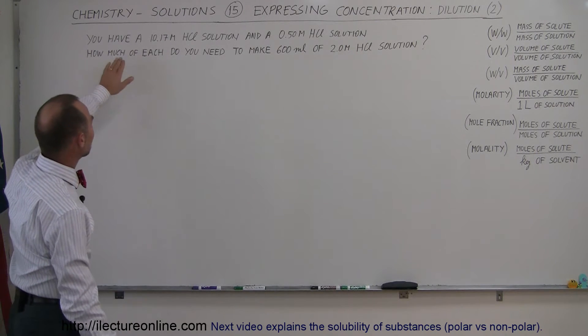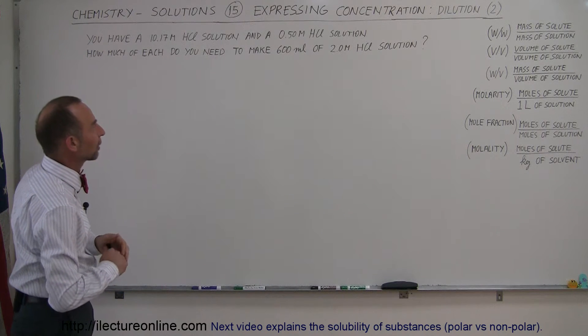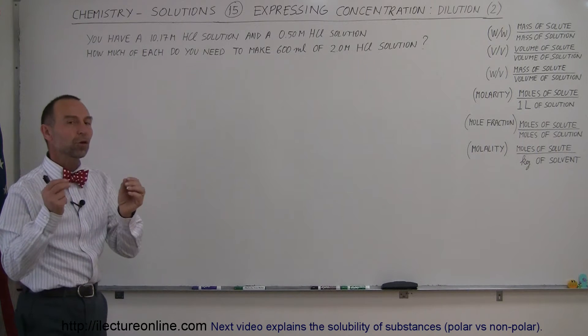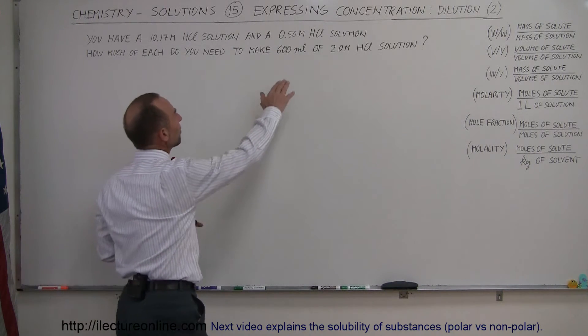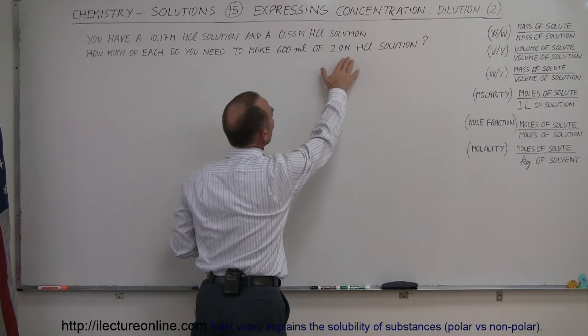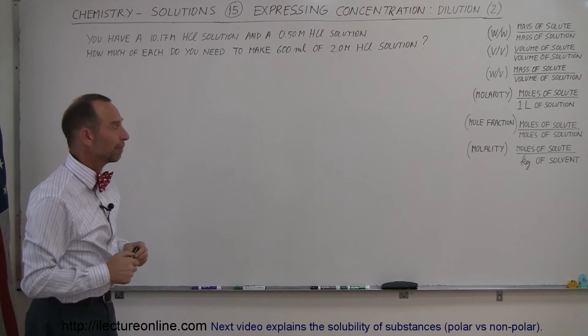You start out with a 10.17 molar hydrochloric acid solution and a 0.5 molar hydrochloric acid solution. You're going to use those two and only those two to come up with 600 milliliters of two molar hydrochloric acid solution. So the question is how much of each do you need to accomplish that?